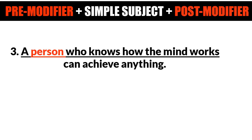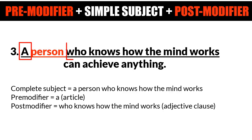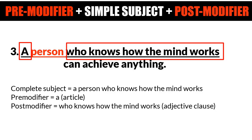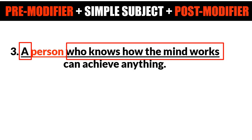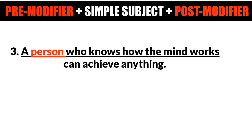Third example: 'A person who knows how the mind works can achieve anything in life.' 'Person' is the simple subject, 'a' is the pre-modifier, and 'who knows how the mind works' is an adjective clause post-modifier. So the complete subject is 'a person who knows how the mind works.' This is the third way to form a complete subject. Visit the website for more examples.